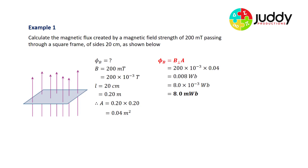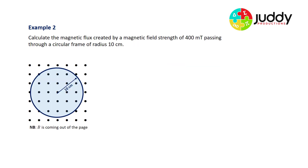Example two: calculate the magnetic flux created by a magnetic field strength of 400 milli-tesla passing through a circular frame of radius 10 centimeters. It's worth noting that one full tesla is actually a very strong magnetic field, so quite often in these questions you will find hundreds of milli-teslas or fractions of a full tesla.